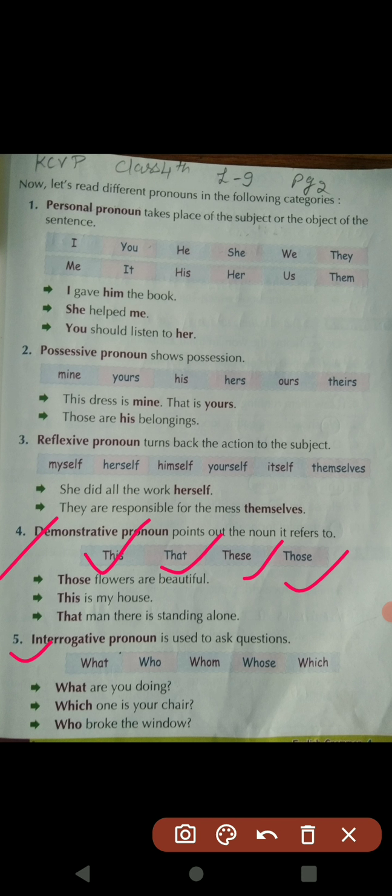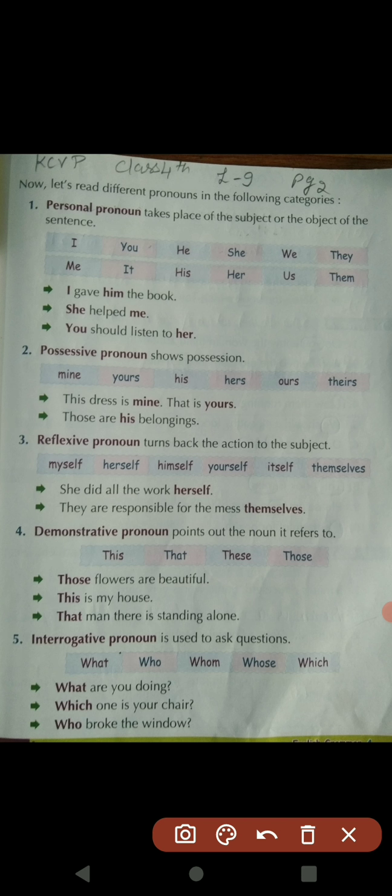The last one is interrogative pronoun. This is used when we ask questions. For example: 'Where are you going?' or 'What is your name?' The biggest identification of interrogative pronouns is that they have a question mark at the end, and they always begin with WH-family words.